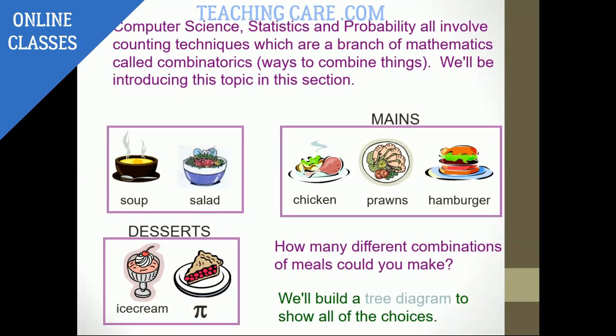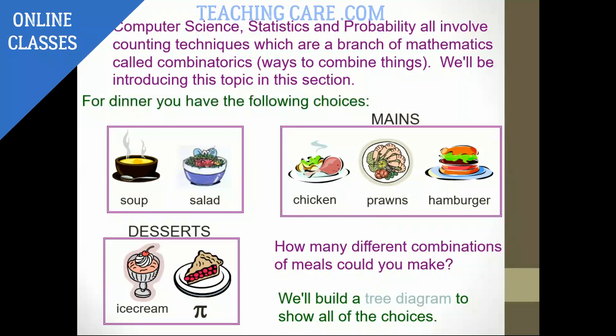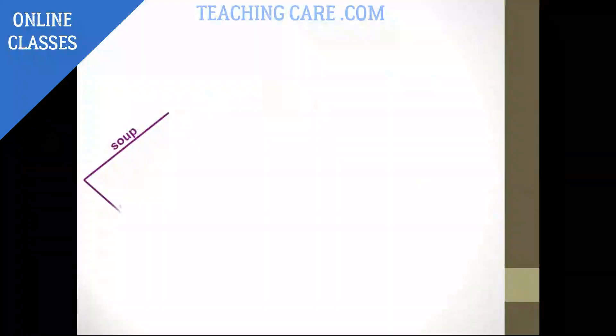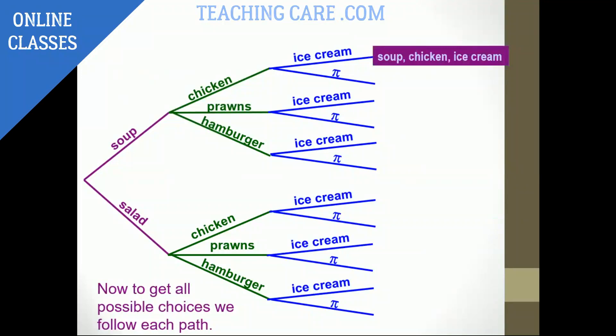So here, you can see for dinner, you're going for the hotel. How many different combinations of meals could you pick? So here we are going to make a tree diagram to show all your choices. For desserts you have ice cream and pie, for entries you have soups and salads, for mains you have chicken, prawns and hamburgers.